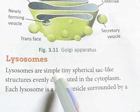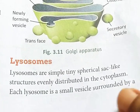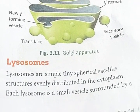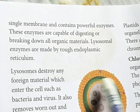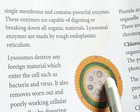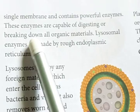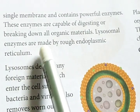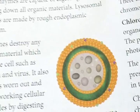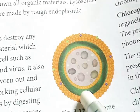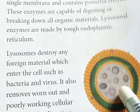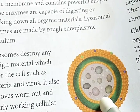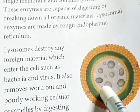Next, lysosome. Lysosomes are very tiny, spherical, sac-like structures evenly distributed in the cytoplasm. Each lysosome is a small vesicle surrounded by a single membrane and contains powerful enzymes. These enzymes are capable of digesting or breaking down organic materials. The lysosomal enzymes are made by the rough endoplasmic reticulum.